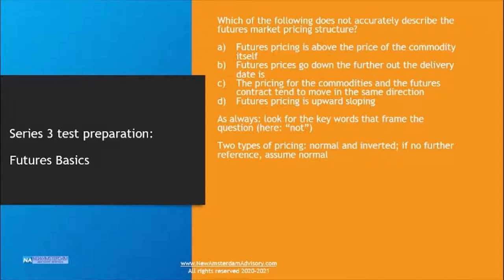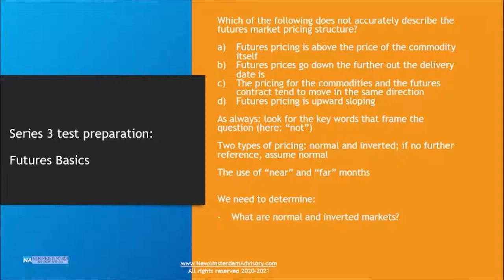As always, look for the keywords — in this case, we're talking about what does not accurately describe the structure. Pricing of futures has two types: the normal and the inverted pricing structure. If no reference is made to one or the other specifically, always assume the normal pricing structure is what is relevant. It has to do with the near and far months of futures contracts — near months have earlier delivery, far months have delivery further into the future.